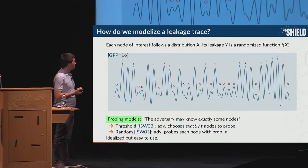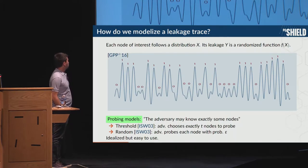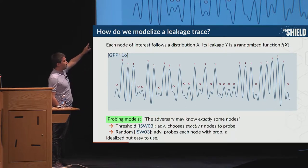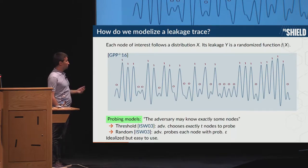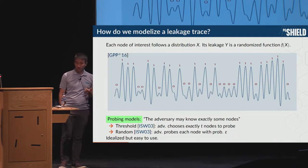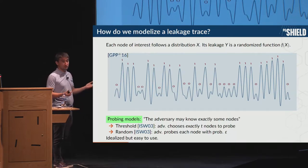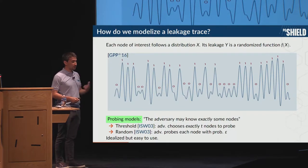Finally, we have much more idealized models — probing models — which are arguably the most popular in cryptography. For example, there is the threshold probing model by Ishai, Sahai, and Wagner. In this model, the adversary can choose exactly T nodes to probe and will know exactly the values of those nodes. The random probing model is also used, where each probe learns the value of a node with probability epsilon, and with probability 1 minus epsilon the probe learns nothing. This is much more idealized, but much easier to work with for computer scientists because the information is simply 0 or 1.